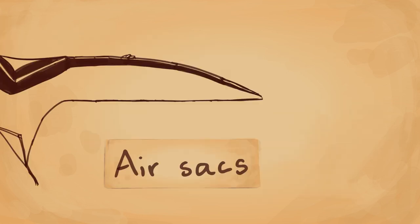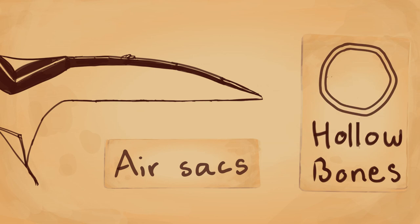Pterosaur wings have air sacs to help them breathe, and have hollow bones, kind of like birds.